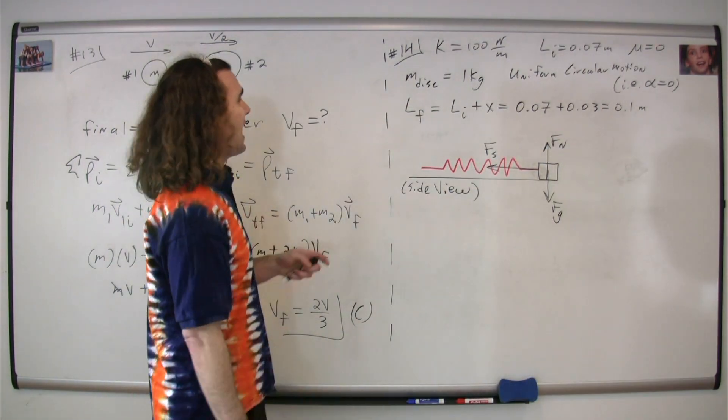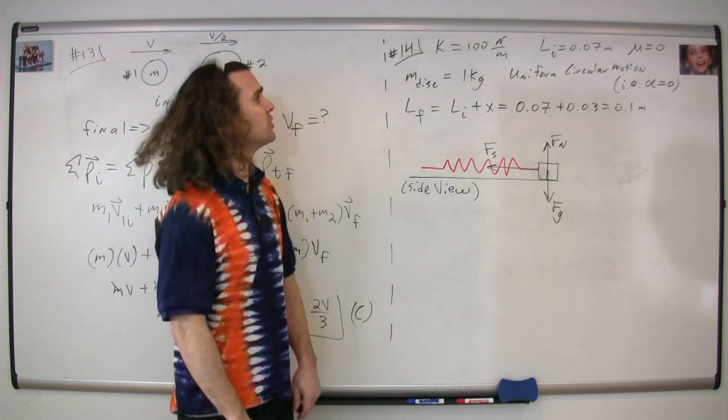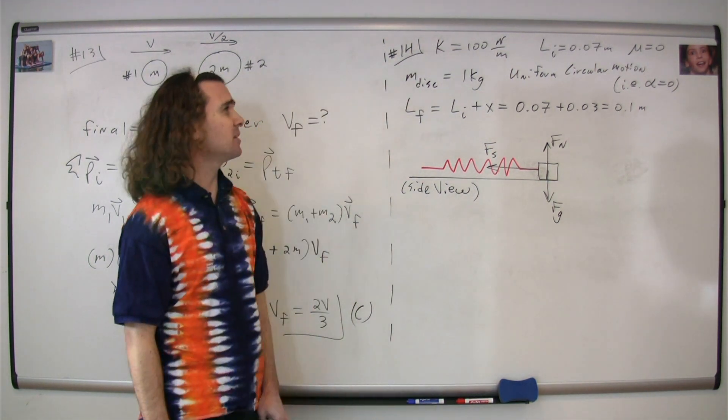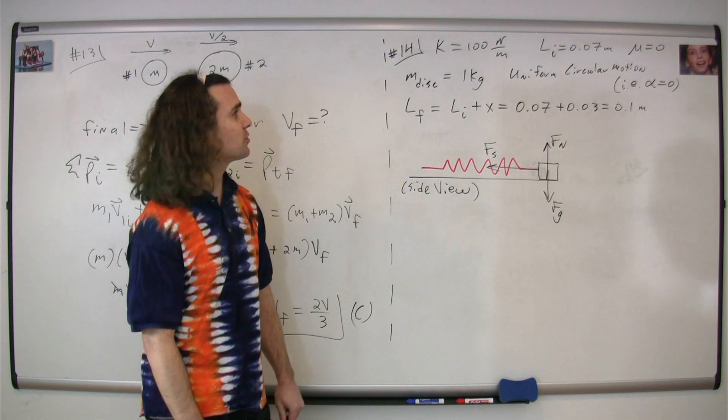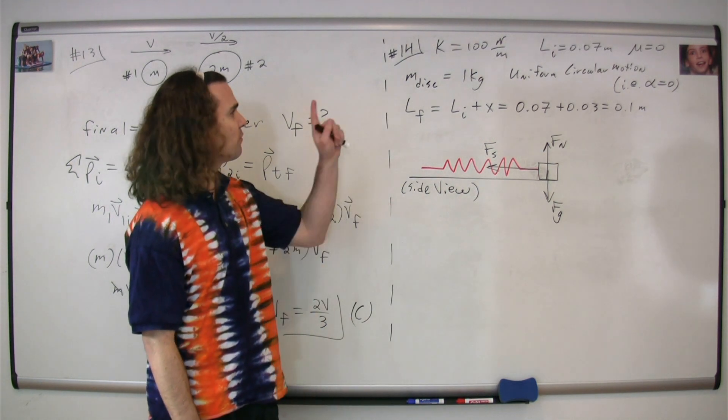Question 14. We have a spring with a spring constant of 100 newtons per meter. The spring has an initial length of 0.07 meters, there's no friction.